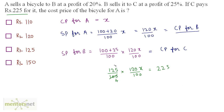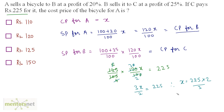Simplifying: 125 × 120X / 10000 = 225. Since 125/100 = 5/4 and 120/100 = 6/5, this gives 3X/2 = 225, so X = 225 × 2/3 = 150. Therefore, the cost price of the bicycle for A is Rs. 150, which is Option C.